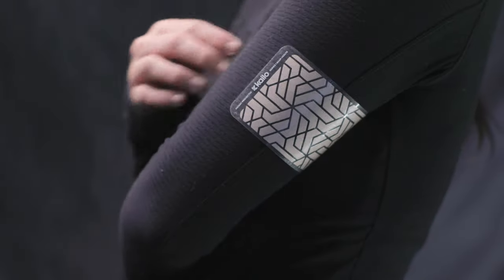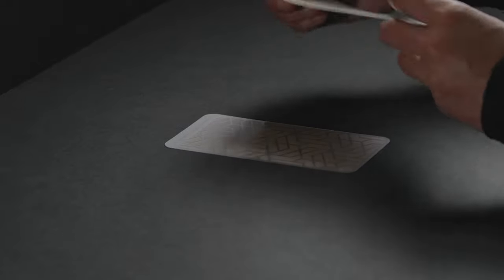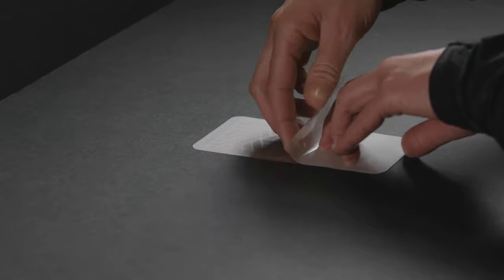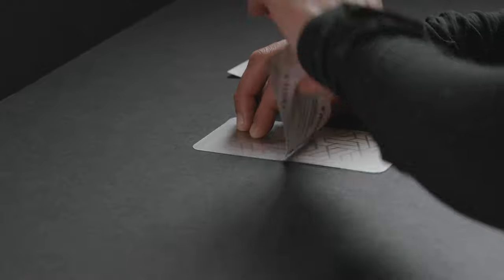First, align the adhesive print side down with the back of your Kylo patch. Holding one end down, remove half of the adhesive backing as you adhere it to the Kylo patch.